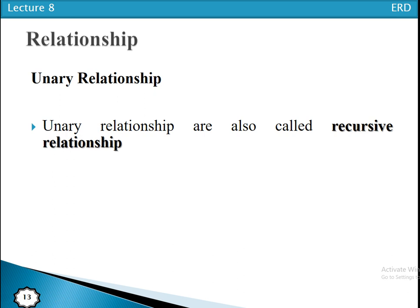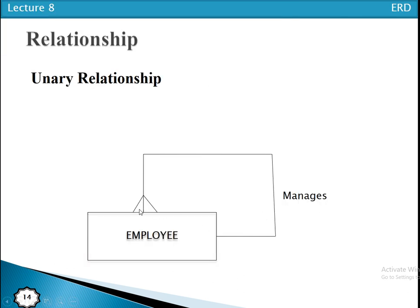A unary relationship is the relationship among instances of a single entity type — only one entity type participates in the relationship. It is also called a recursive relationship, meaning the relationship is with itself. For example, employee manages other employees — the employee entity type has a relationship with itself. Another example: one entity type is course, where each course has many prerequisite courses.